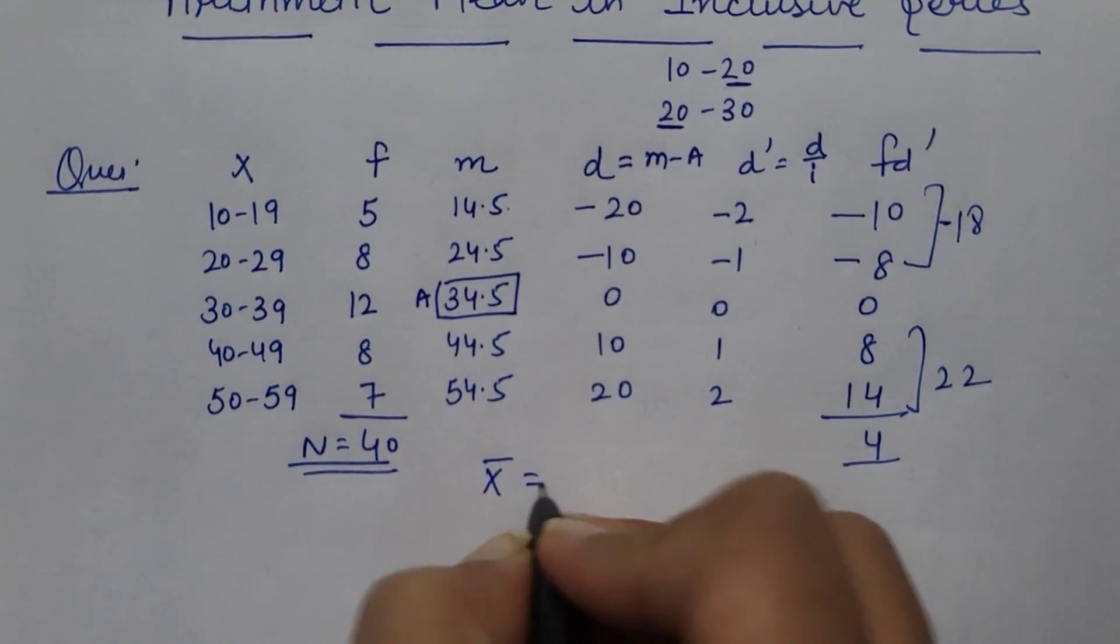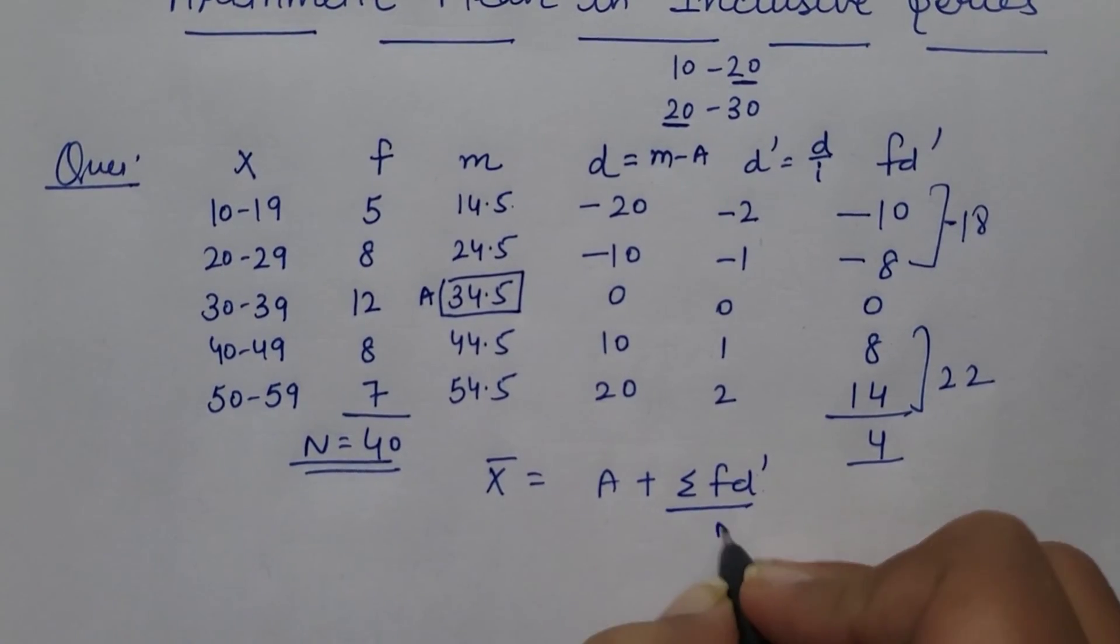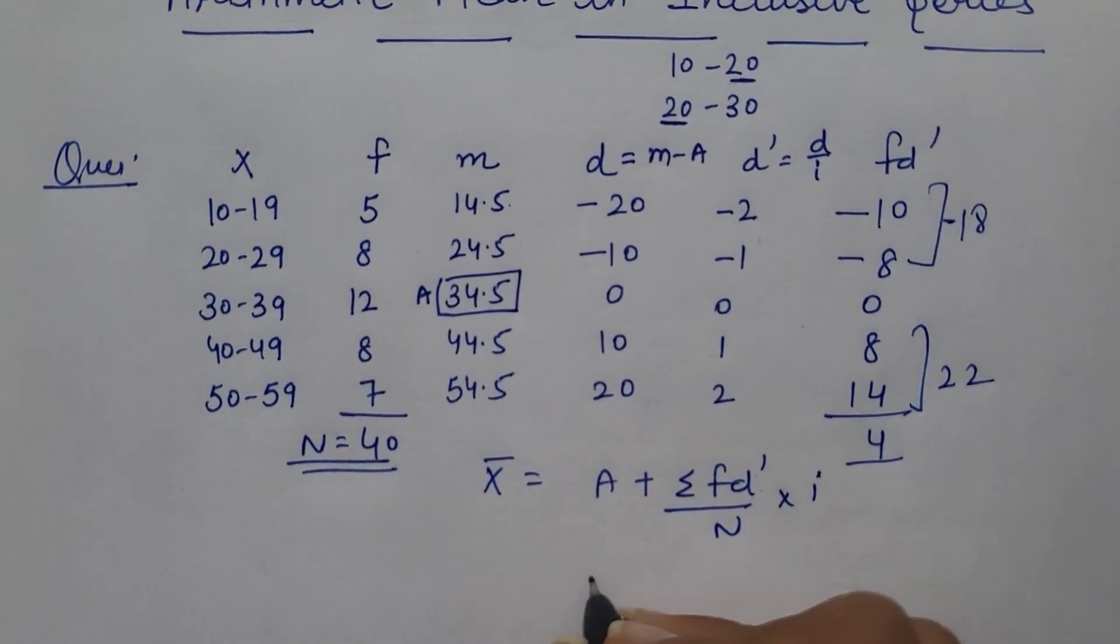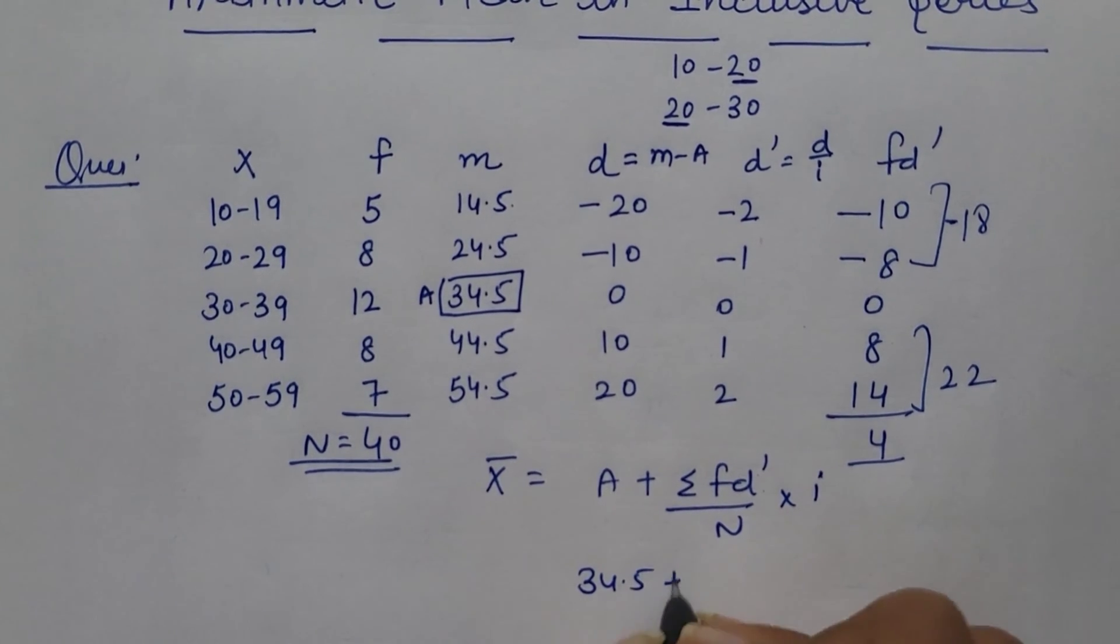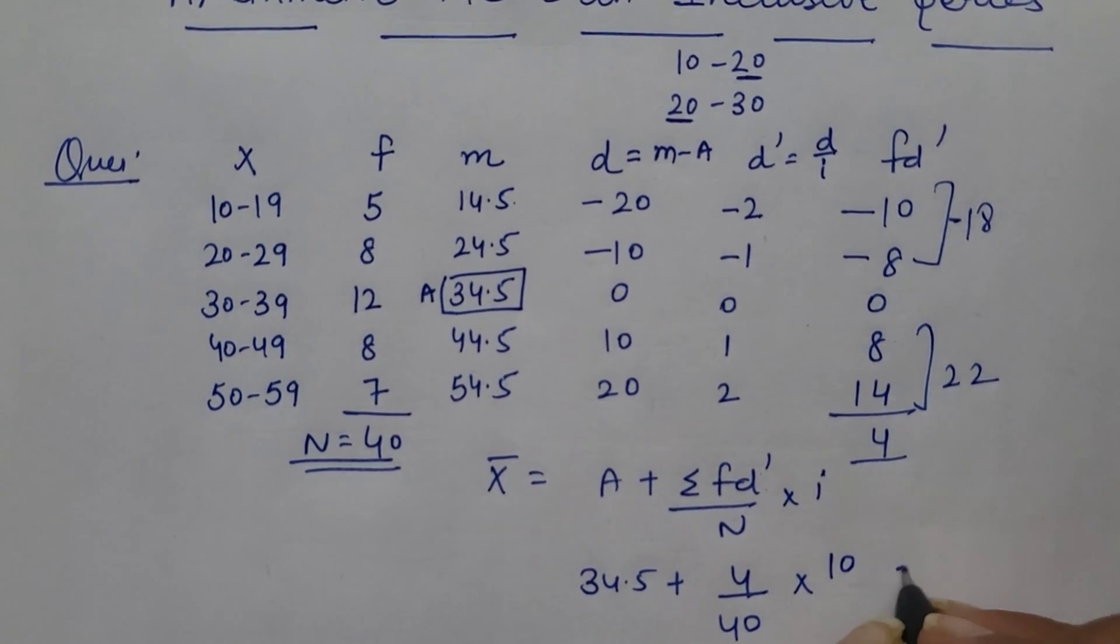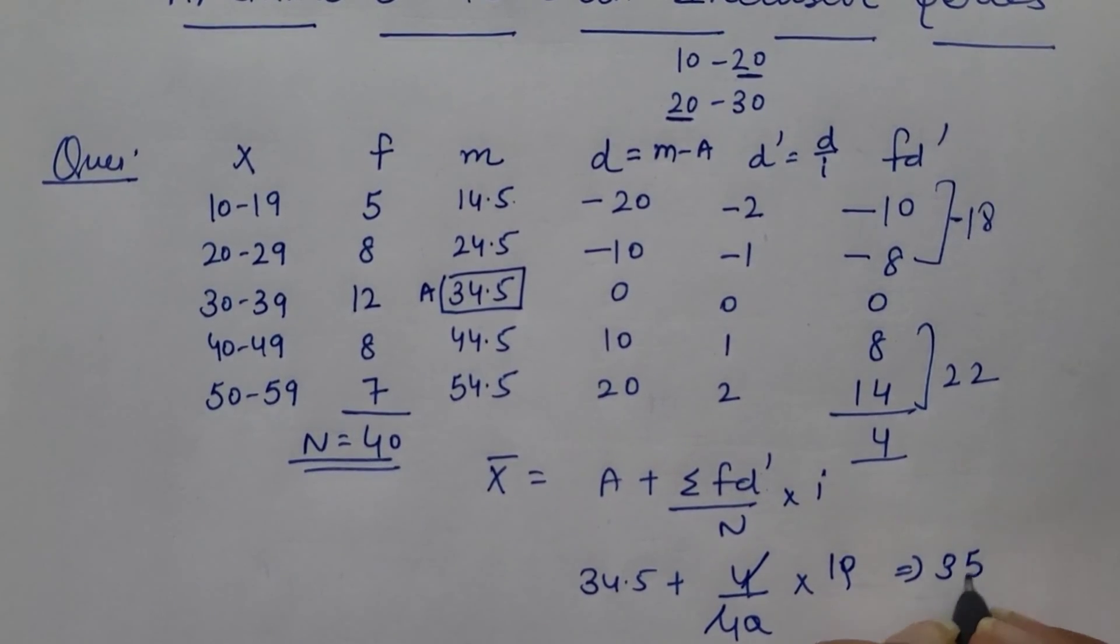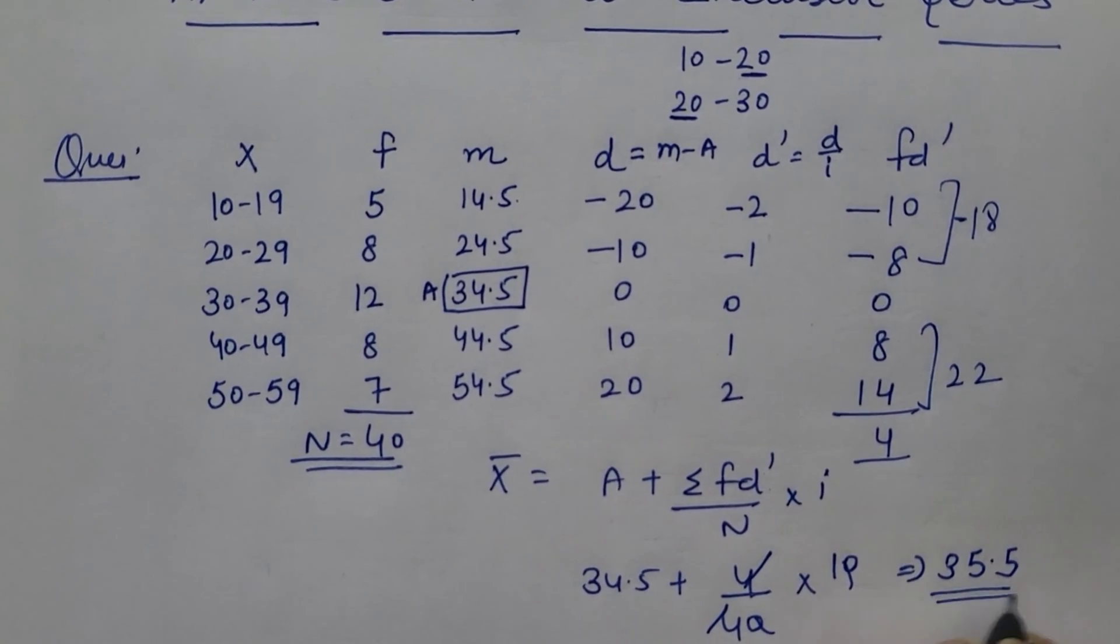Frequency we will total, it would be 40. So mean calculated as per step deviation method is 34.5 plus 4 upon 40 into 10. So answer is 35.5.